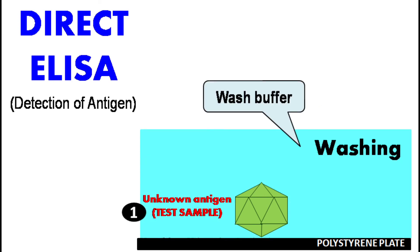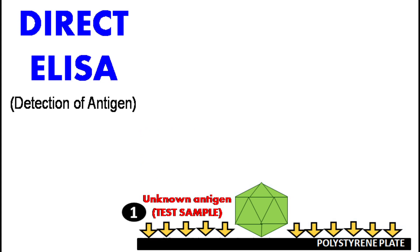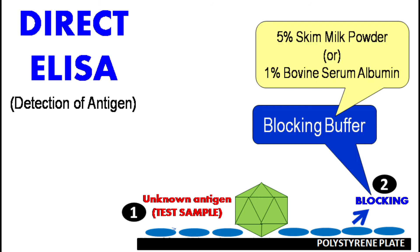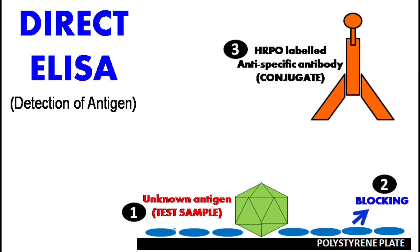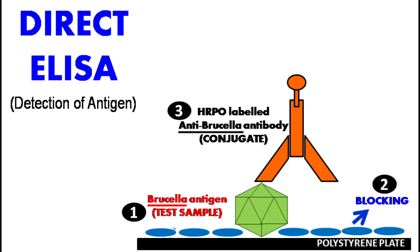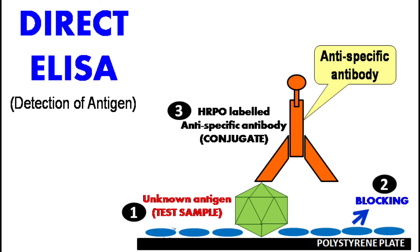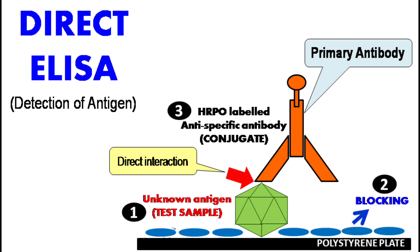Between each step, washing is done using wash buffer made up of 0.05% or 0.1% Tween 20. After washing, there are unoccupied spaces left that may interfere with nonspecific binding of any antigen or antibodies. So the second step is blocking — these unoccupied spaces are blocked using blocking buffer made up of 5% skim milk powder or 1% bovine serum albumin. After blocking, incubation and washing, a known HRPO-labeled anti-specific antibody is added to bind to this specific antigen. Since these antibodies are in direct contact or direct interaction with the antigen, they are considered as primary antibody.